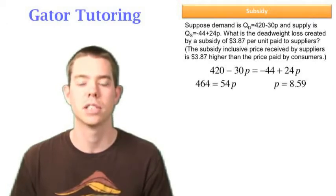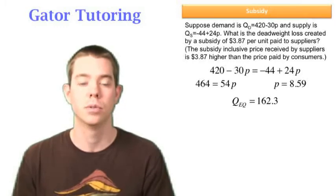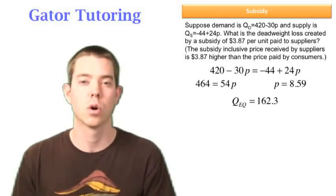And we do that and we find that price is equal to $8.59, so quantity is equal to 162.3. Again we can plug in 8.59 into quantity demanded or quantity supplied to get the equilibrium quantity. In either case you'll get 162.3.